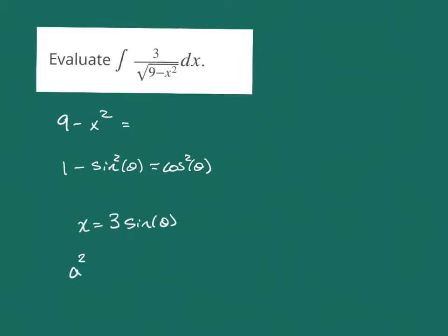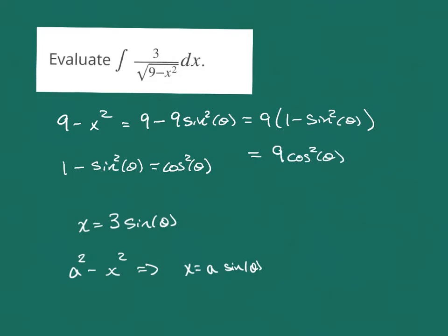So basically, if I'm seeing something that looks like a squared minus x squared, then that tells me that my substitution can just be a times the sine of theta for that. And so what that gives me in this case is 9 minus, if x is 3 sine theta, then that's going to give me 9 sine squared. If I factor out a 9, now that gives me my 1 minus sine squared.